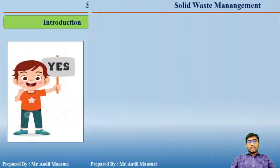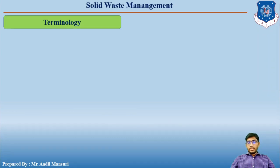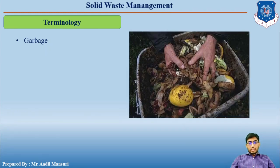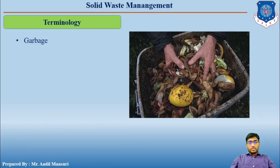Let us now discuss some terminologies. The first one is garbage. Garbage is the waste coming out of the kitchen, which is organic in nature and decomposes quickly. Its density is usually 450 to 900 kg per cubic meter. It typically includes the peels of fruits and vegetables or discarded and stale food. All these things are included in garbage.